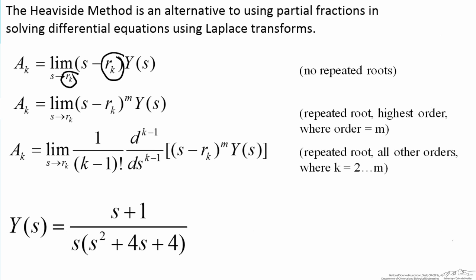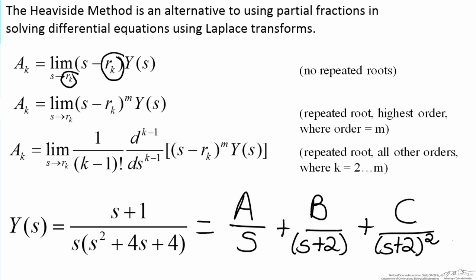So the first step of the Heaviside method is very similar to partial fractions where we separate them all based on the root. So here we'll have A over s plus B over s plus 2 plus C over s plus 2 squared. So if we were to look at these, to find A, the s is not a repeated root, so therefore we're going to use the first equation for that.